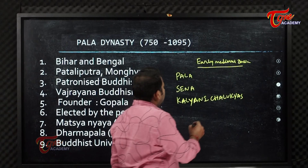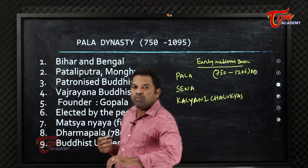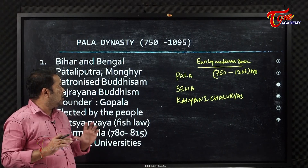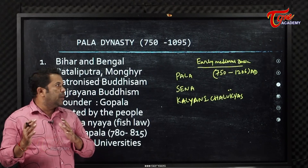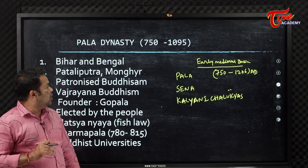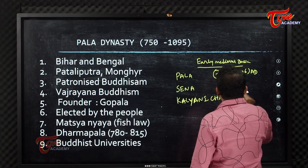We will talk about early medieval India from 750 AD to before 1206 AD. The first half of the medieval period is called early medieval India. In this period, we will talk about Rajputs, Rashtrakutas, and Cholas.